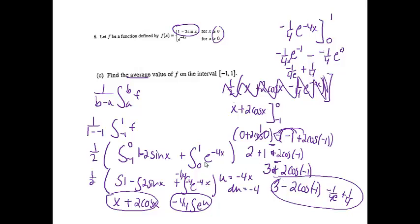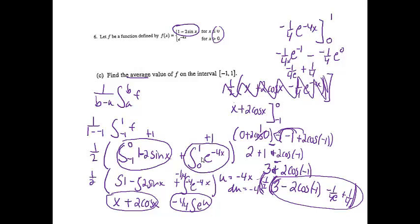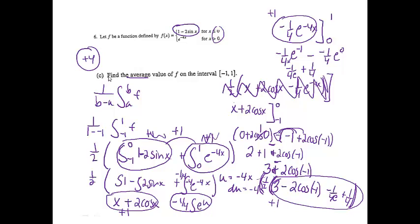This part was worth four points total. One point for writing the integral expression, one point for having both split integrals, one point for correctly getting both antiderivatives — x plus 2 cosine x, and negative 1/4 e to the negative 4x — and one point for the correct final answer. The whole problem was worth 9 points total, so please give yourself a score out of 9 and circle it on your paper.